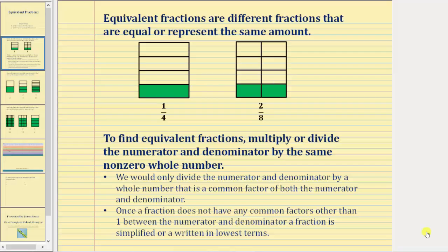To find equivalent fractions, we multiply and divide the numerator and denominator by the same non-zero whole number. A couple things to remember: we would only divide the numerator and denominator by a whole number that is a common factor of both the numerator and denominator.